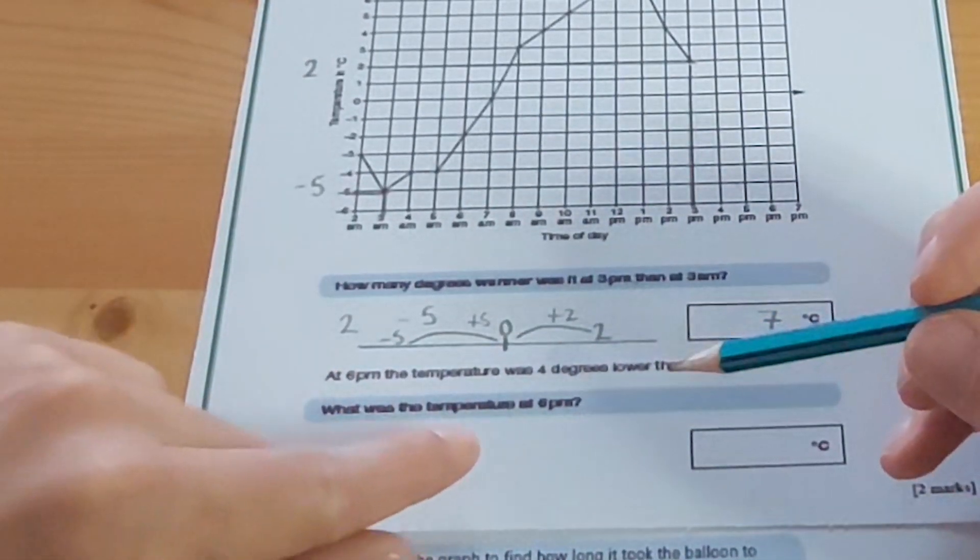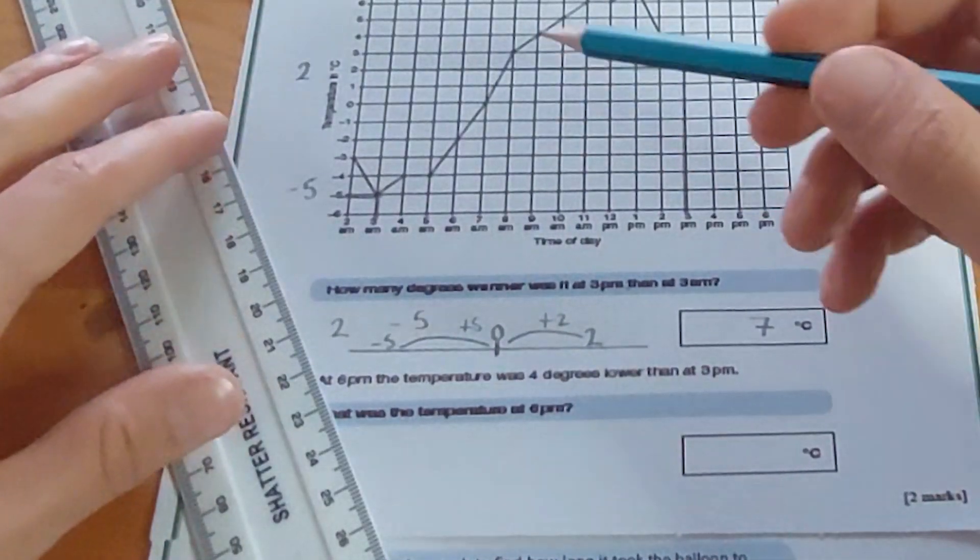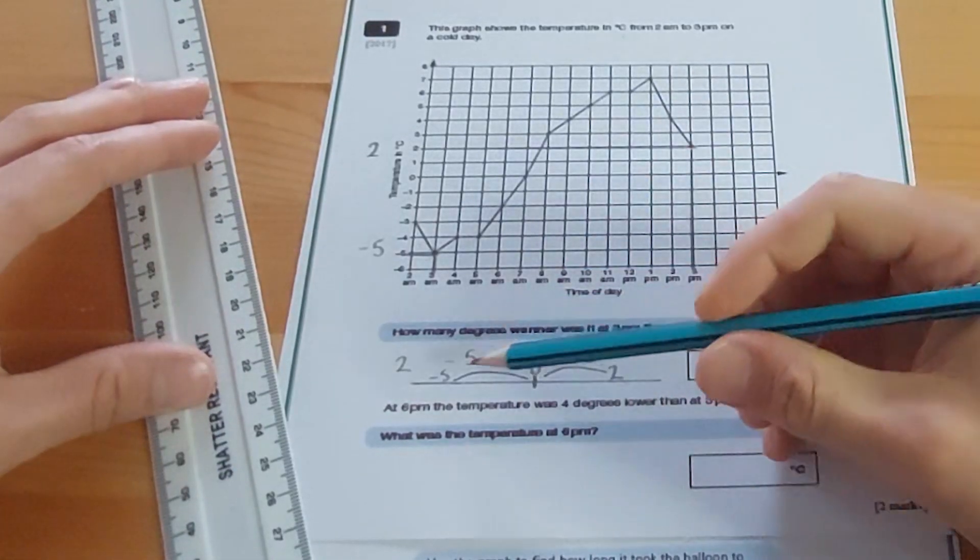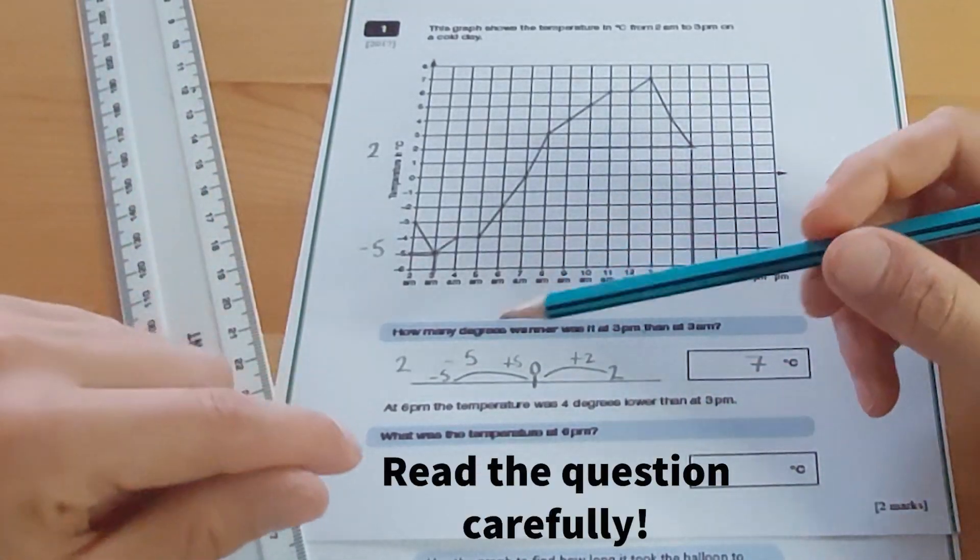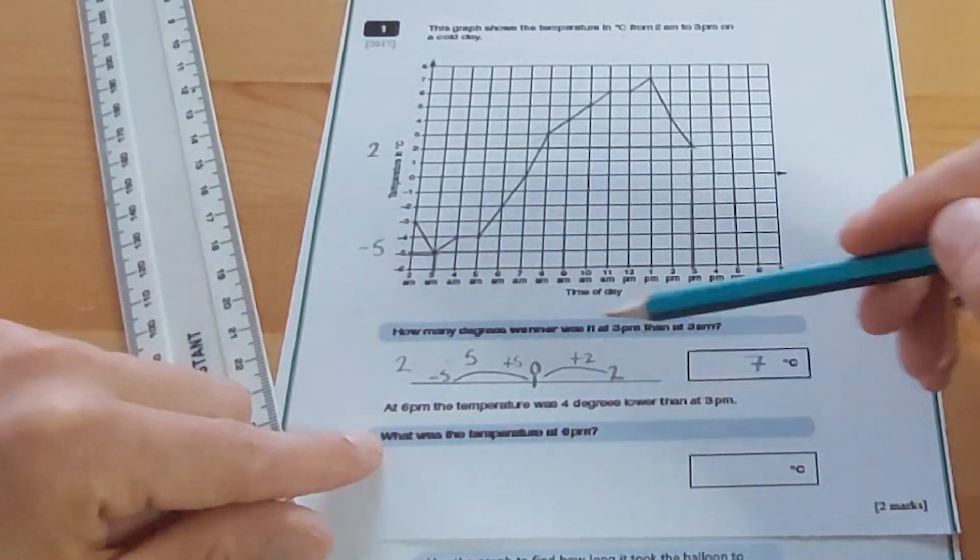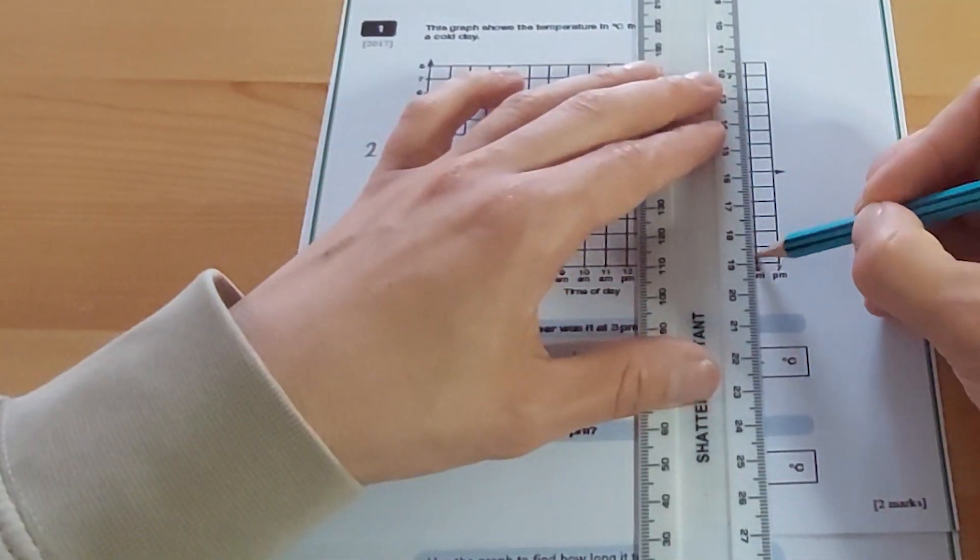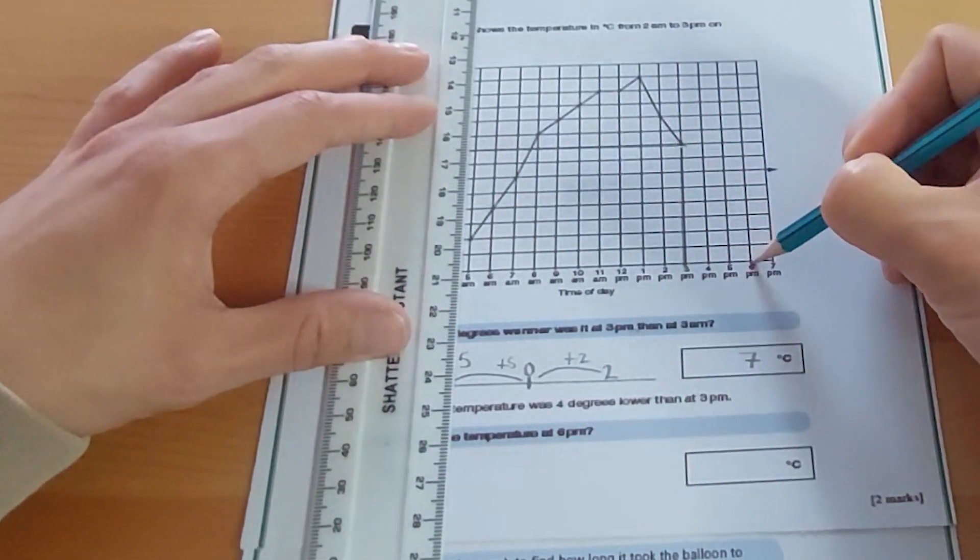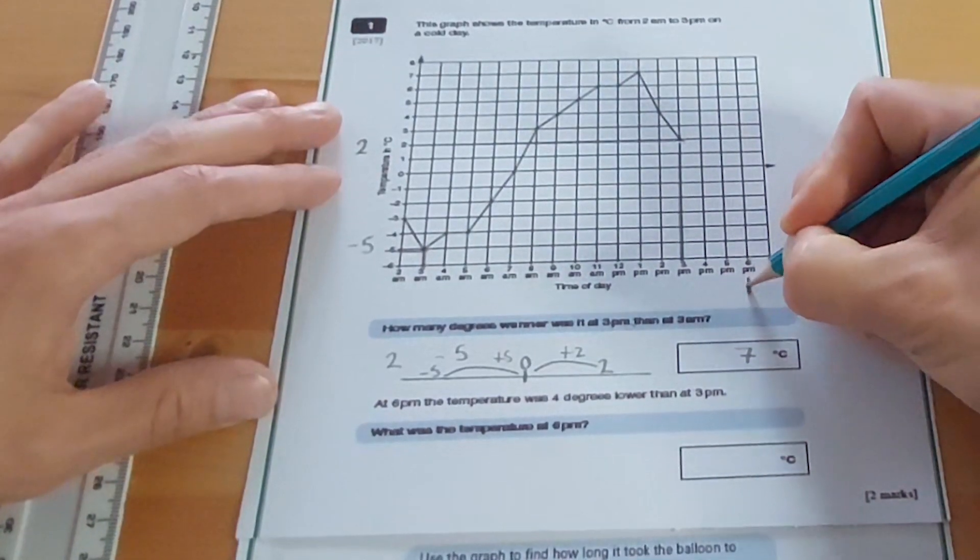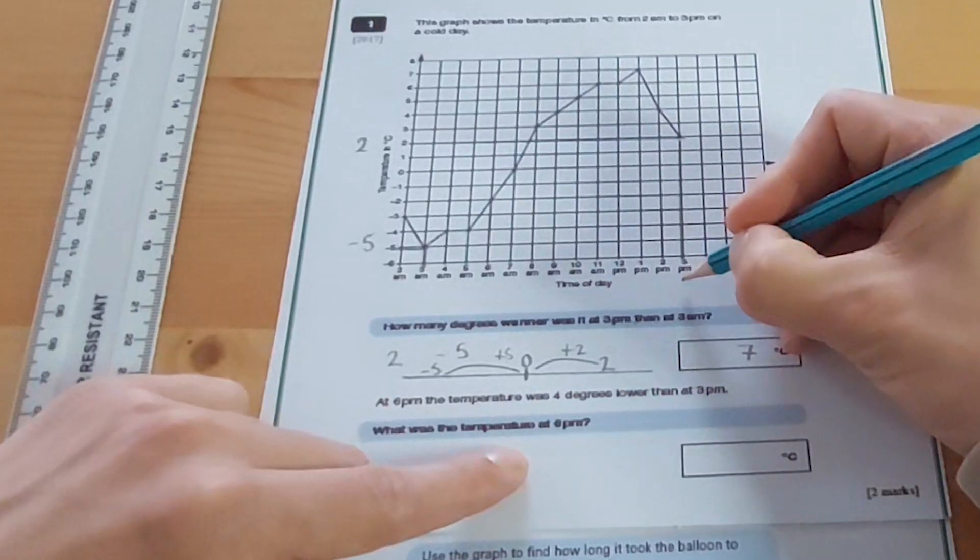Next question. What was the temperature at 6pm? Let's find 6pm. Oh no, I read that question wrong, so read the question carefully. At 6pm the temperature was 4 degrees lower than at 3pm. What was the temperature at 6pm? Now, if I look at 6pm here, there is no line for 6pm. It's asking you to try and work it out, but it's saying that the temperature at 6, which is here, was 4 degrees lower than the temperature at 3, which was here.